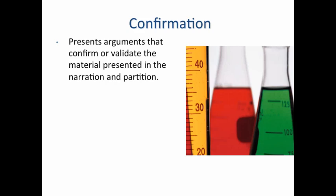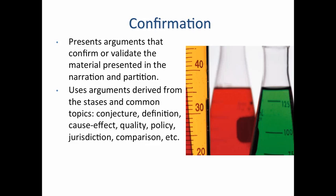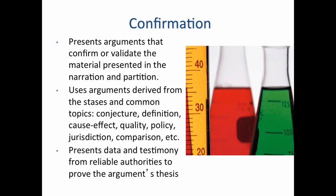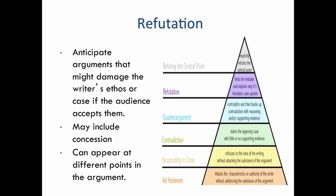In the confirmation, you're presenting arguments that confirm or validate the material presented in the narration and partition. You're using arguments derived from the stasis and from the common topics — questions of conjecture, definition, cause and effect, quality, policy, jurisdiction, comparison, and so forth. You're presenting data and testimony from reliable authorities to prove your argument's thesis. This is the place where you're using all that research and all the claims you've constructed — the claims, the evidence, and the analysis come in the confirmation and refutation.